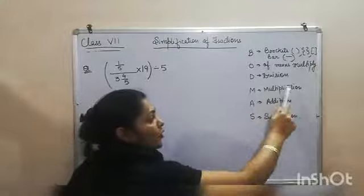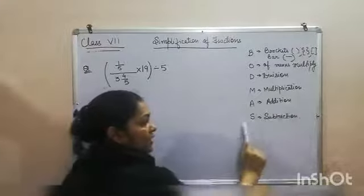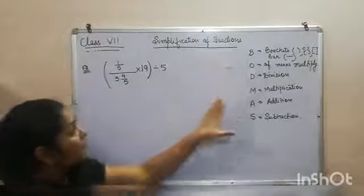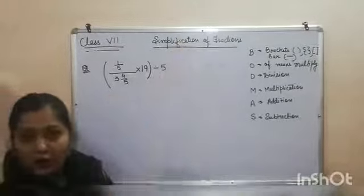D for division, M for multiplication, A for addition, and S for subtraction. So we will be using BODMAS in the simplification of fractions.